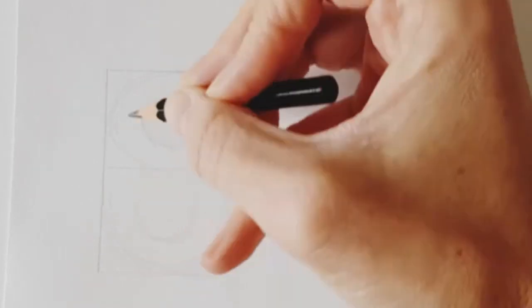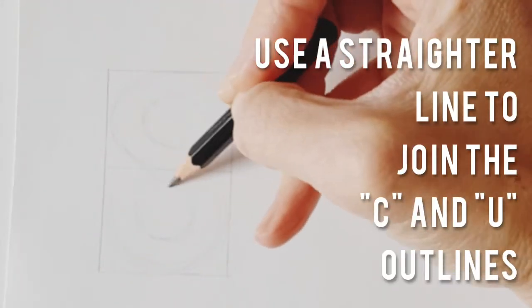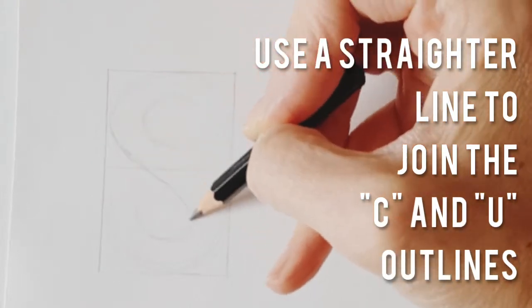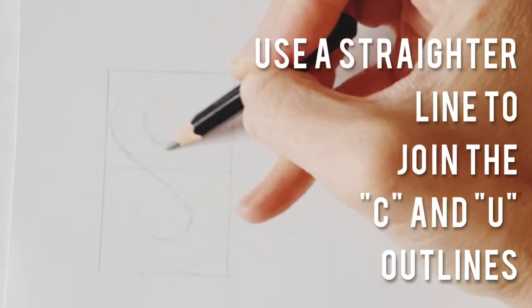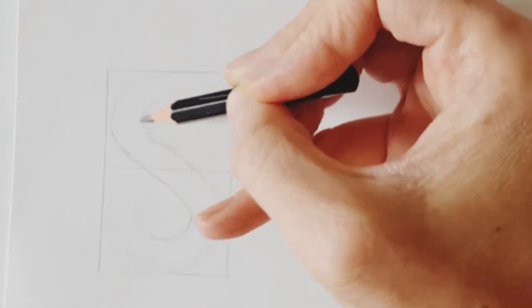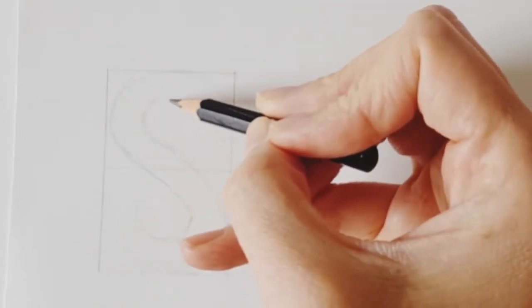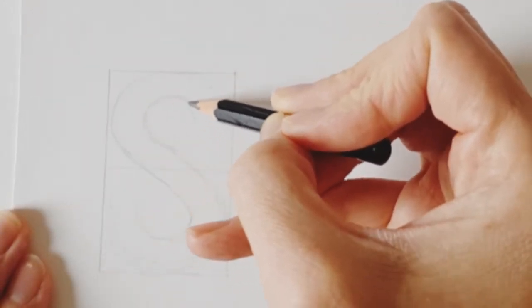This is a slightly trickier part, so you're going to take that bottom line from the C and try and join it to the inner line on the U with a slightly straighter edge. And you do the same with the inner line of the C and the outer line of the U.